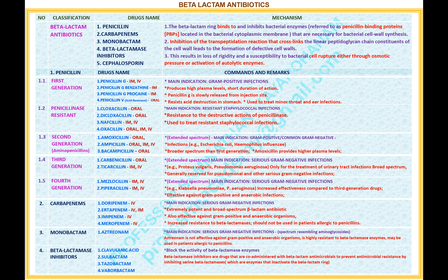Number 4 — Name of the classification: Beta-lactamase inhibitors. Drugs under this classification: 1. Clavulanic acid. 2. Sulbactam. 3. Tazobactam. 4. Vaborbactam. Comments and remarks: block the activity of beta-lactamase enzymes. Beta-lactamase inhibitors are drugs that are co-administered with beta-lactam antimicrobials to prevent antimicrobial resistance by inhibiting serine beta-lactamases, which are enzymes that inactivate the beta-lactam ring.